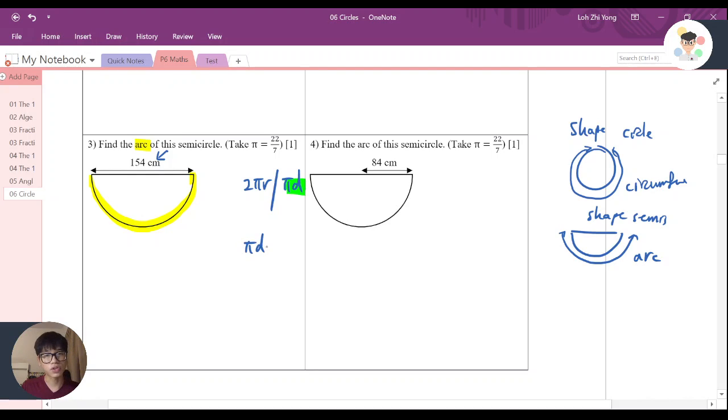And however, the question now is giving me semi-circle, which is half of the circle. That's why my formula here needs to be half πd. Okay? And let's continue.